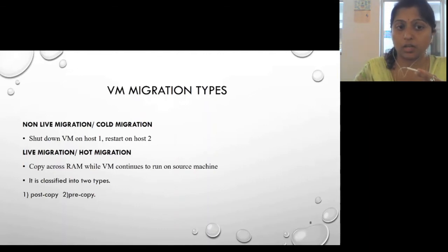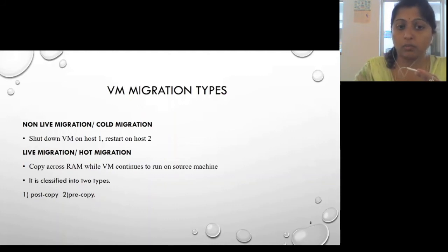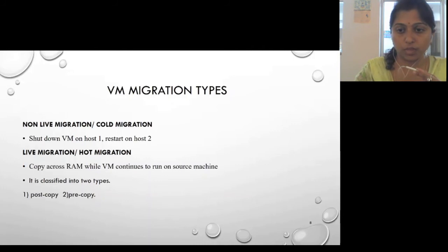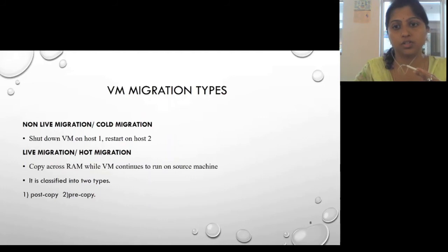VM migration comes in two types: non-live migration and live migration. In non-live migration, the VM is shut down on host 1 and restarted on host 2. In live migration, memory pages (RAM) are copied from one host to another without shutting down, transferring simultaneously from source to destination machine. Live migration has two subtypes: post-copy and pre-copy.